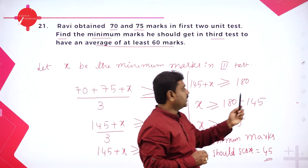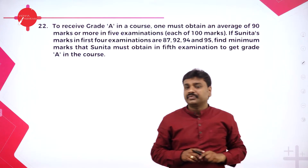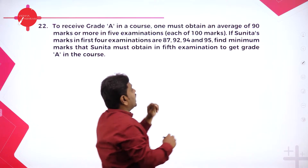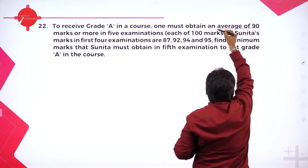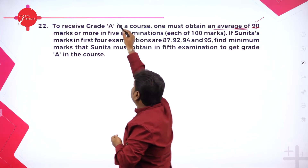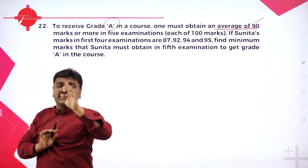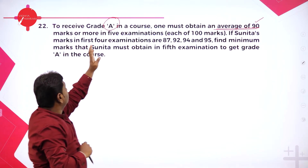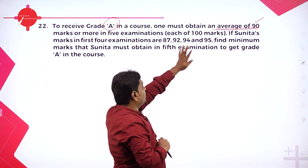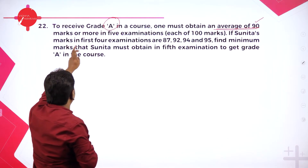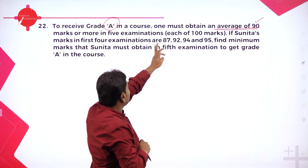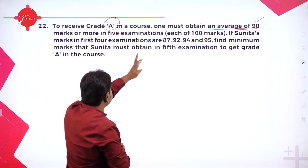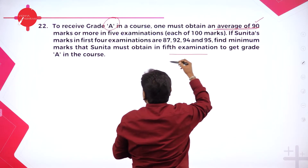You convert the words to inequality. Next problem: to receive A grade, one must obtain an average of 90 or more. There are 5 examinations, each of 100 marks. If Sunita's marks in the first 4 examinations are 87, 92, 94, and 95, find the minimum marks Sunita must get in the 5th exam to get A grade.